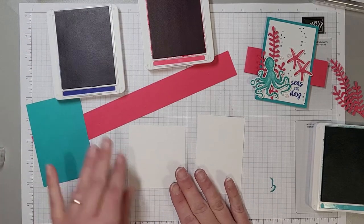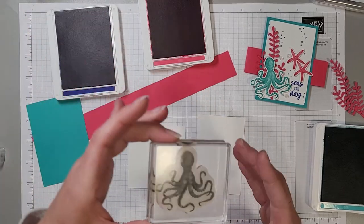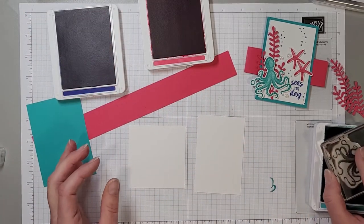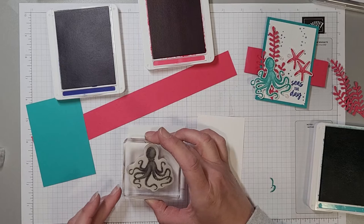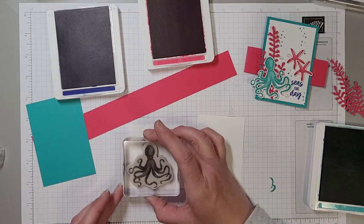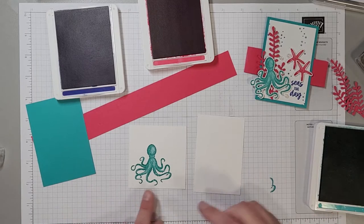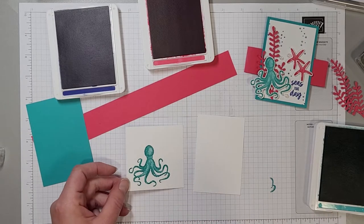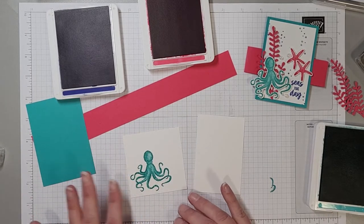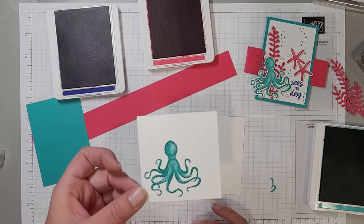Now on our three by three scrap I'm going to stamp another octopus in Bermuda Bay just like we did on the inside. He's going to fit on there and with these photopolymer stamps remember you don't want to push super super hard. You want to be able to see all of the shading and all of the details that these stamps have to offer. So ink it up nicely, gentle stamping and you'll get a nice detailed image.